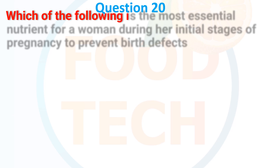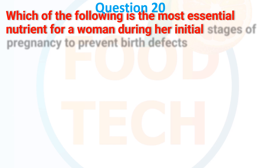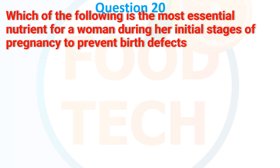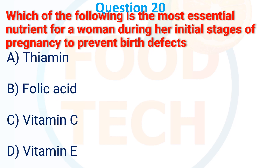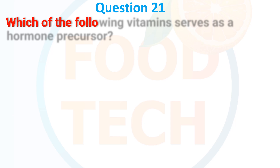Question 20. Which of the following is the most essential nutrient for a woman during her essential stage of pregnancy to prevent birth defects? A. Thiamine. B. Folic acid. C. Vitamin C. D. Vitamin E. The correct answer is folic acid.